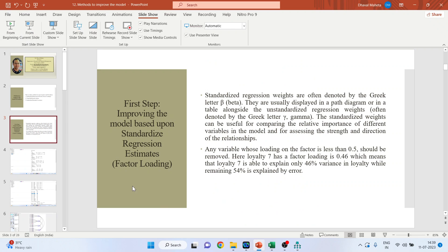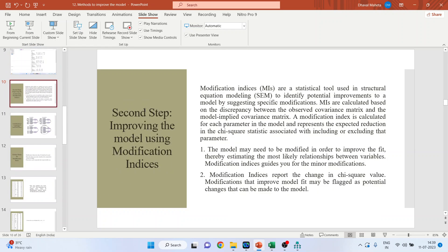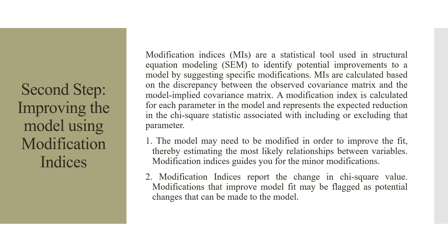The next step is improving the model using modification indices. Modification indices are a statistical tool used in structural equation modeling to identify potential improvements to a model by suggesting specific modifications. They are calculated based on the discrepancy between the observed covariance matrix and the model-implied covariance matrix. A modification index is calculated for each parameter and represents the expected reduction in chi-square statistics. Modification indices guide you for minor modifications and report the change in chi-square value.